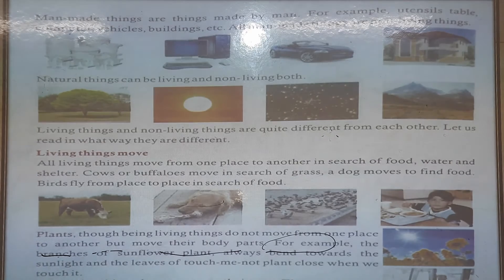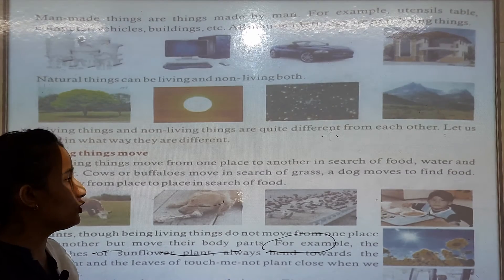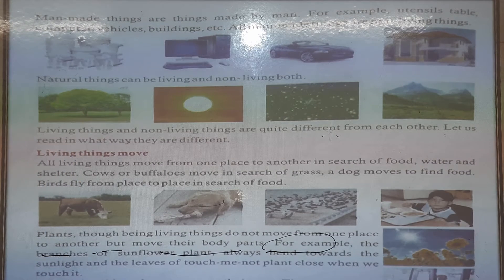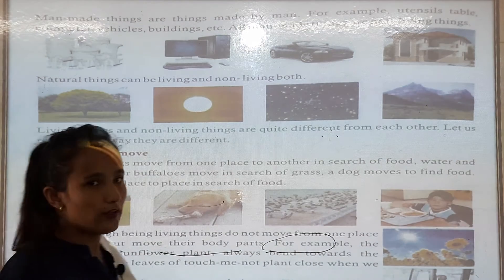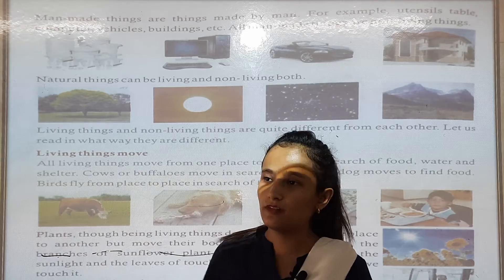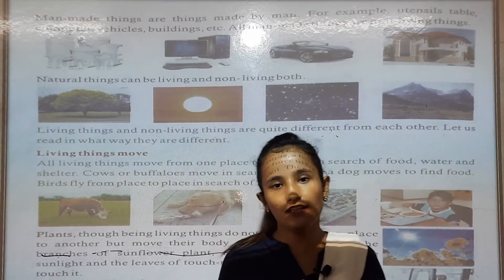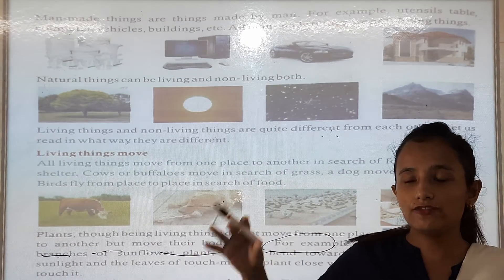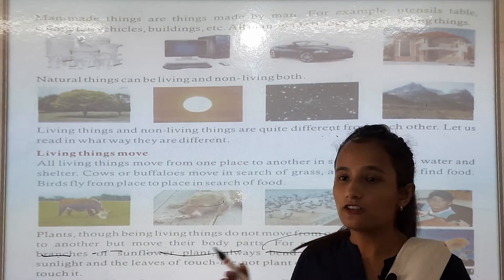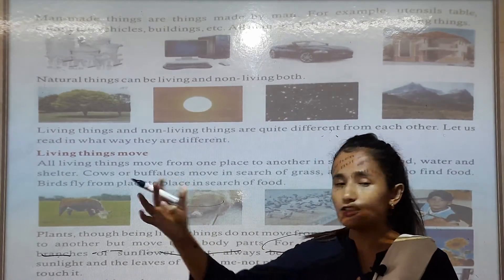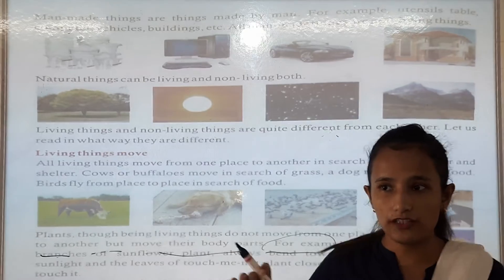Living things can move, but non-living things cannot move. Living things move from one place to another in search of food, water, shelter — cows or buffaloes. Living things can move from one place to another. When animals are hungry, they go in search of food. For example, a dog searches for food on the road, in streets.